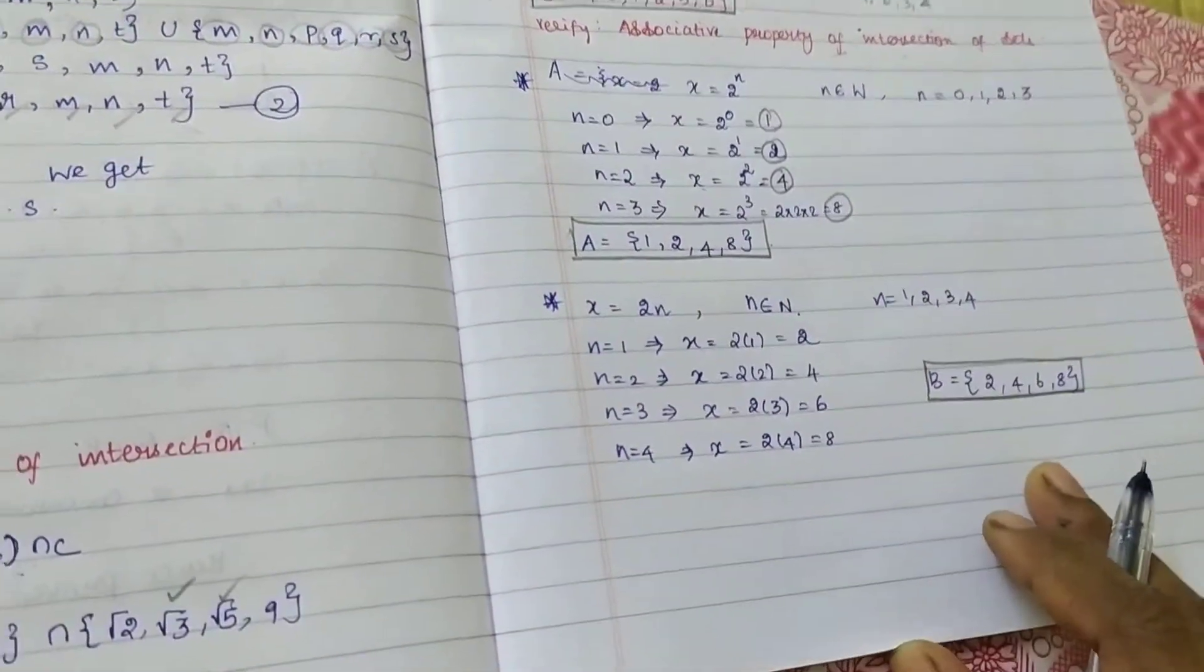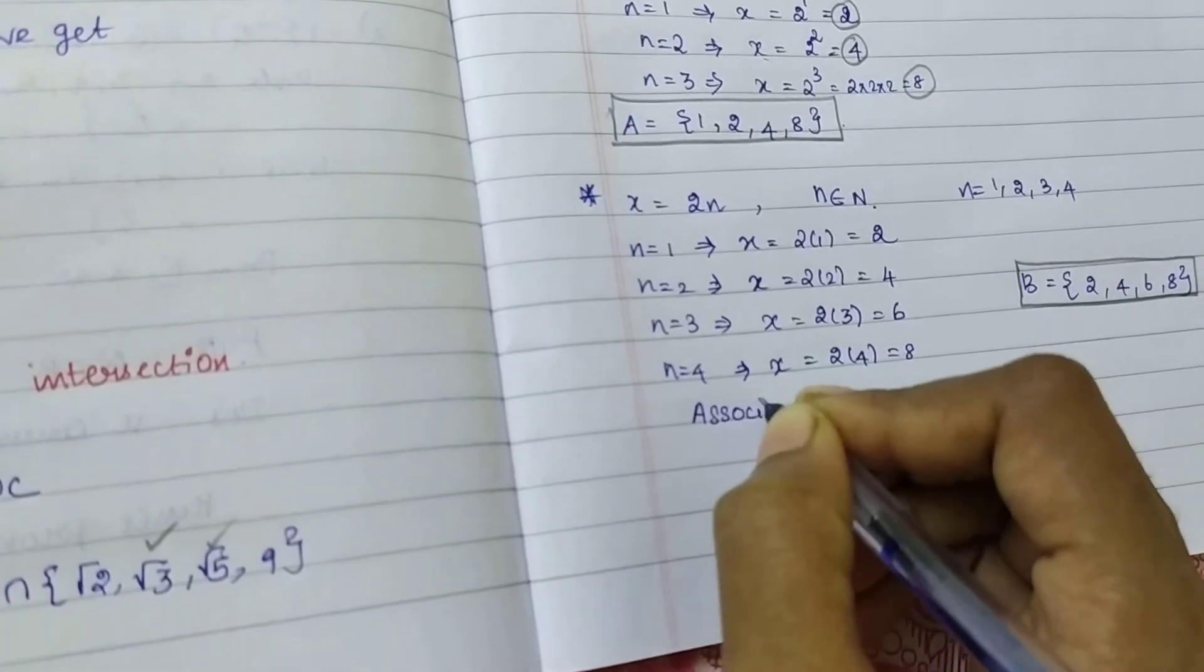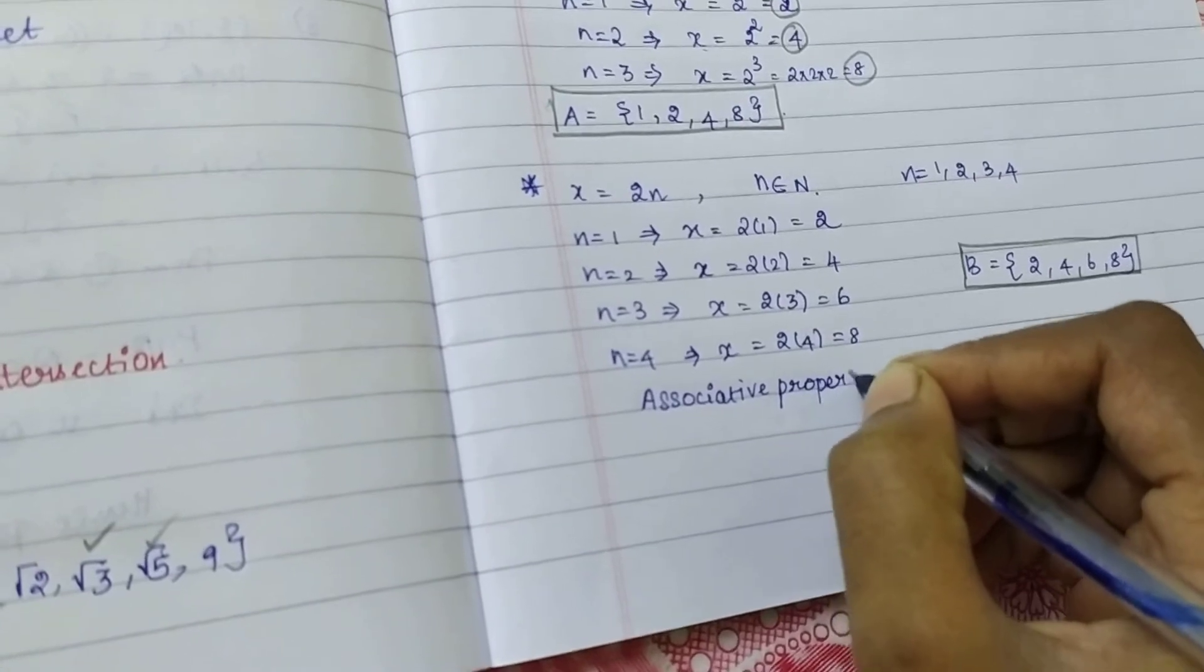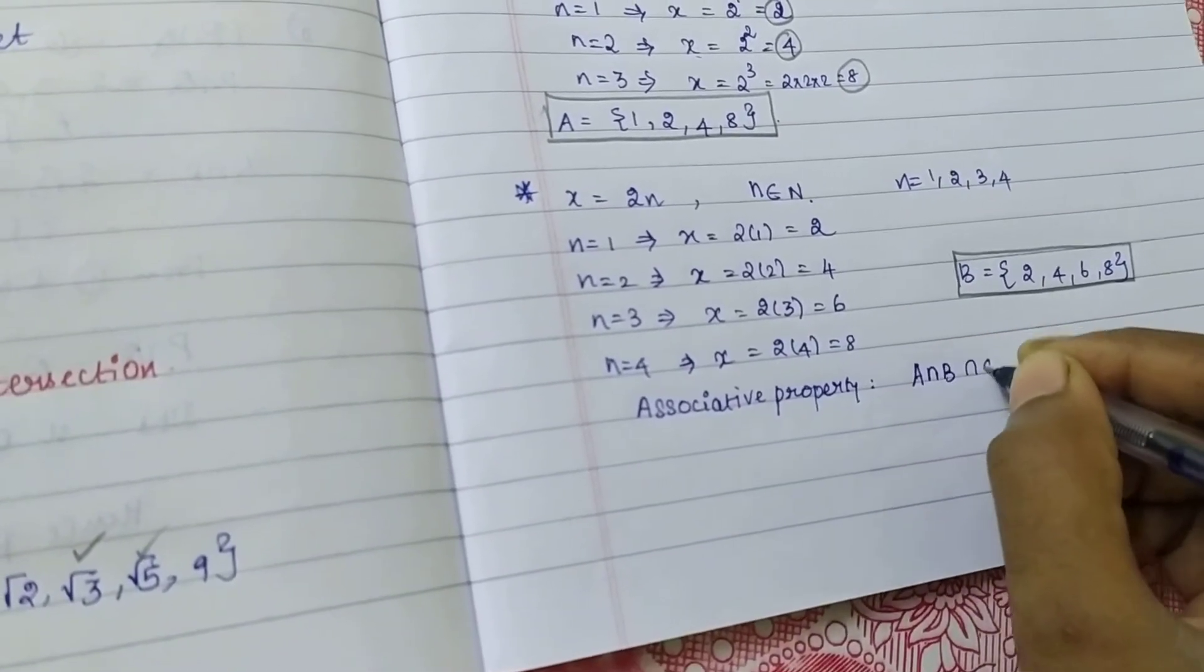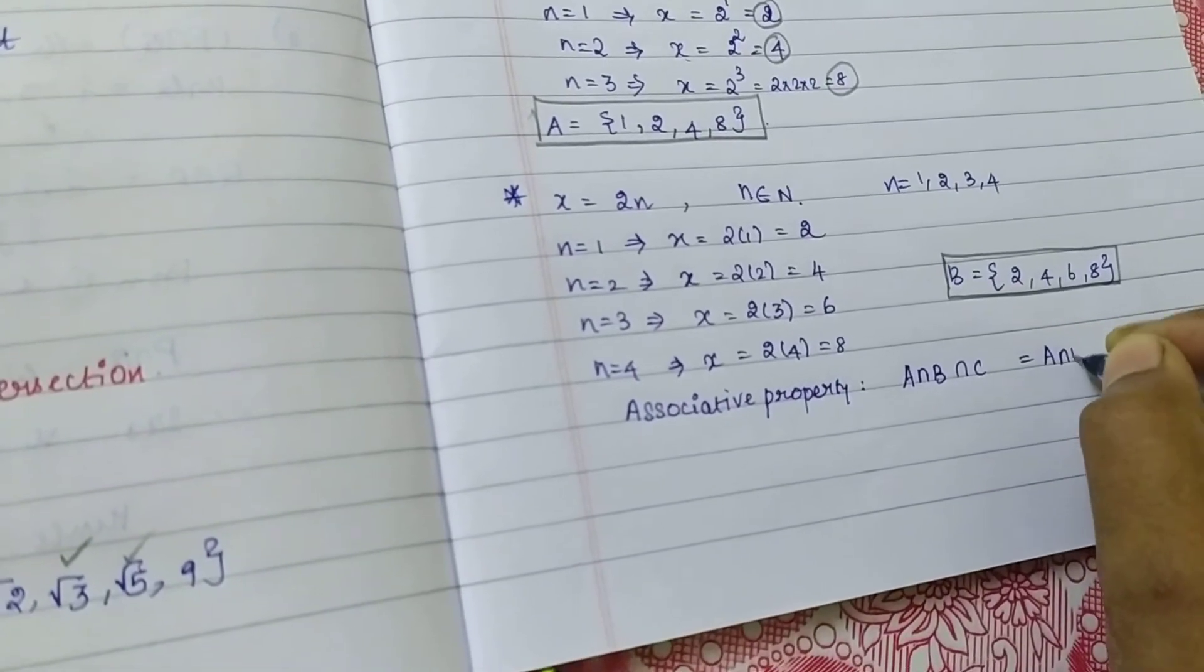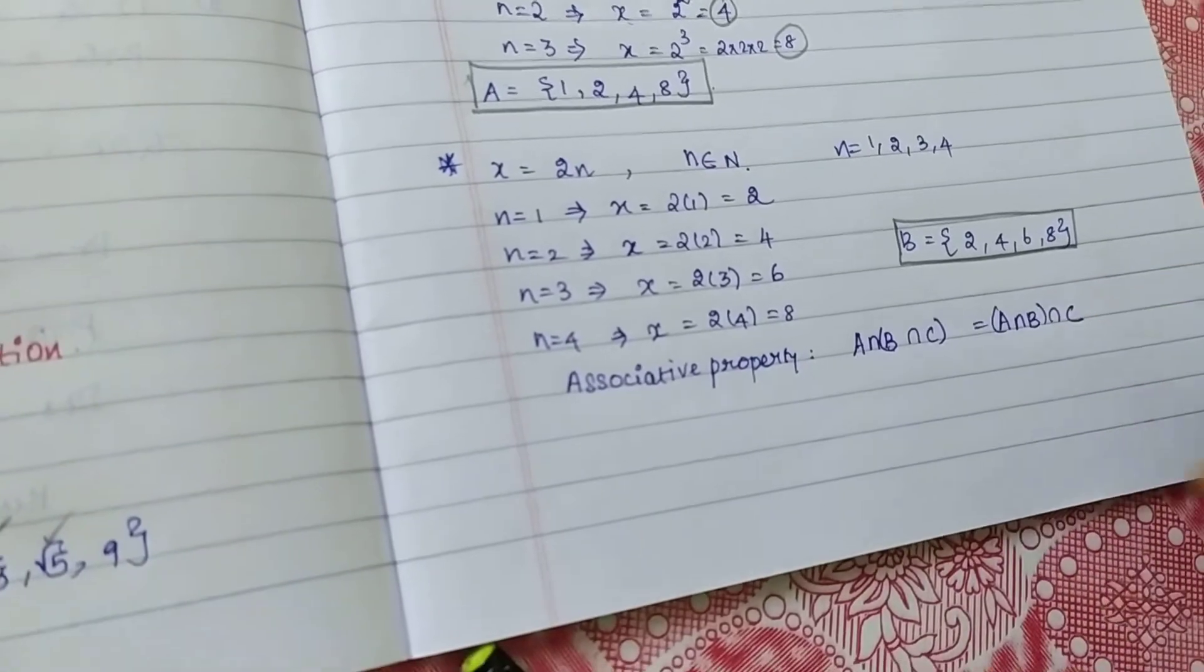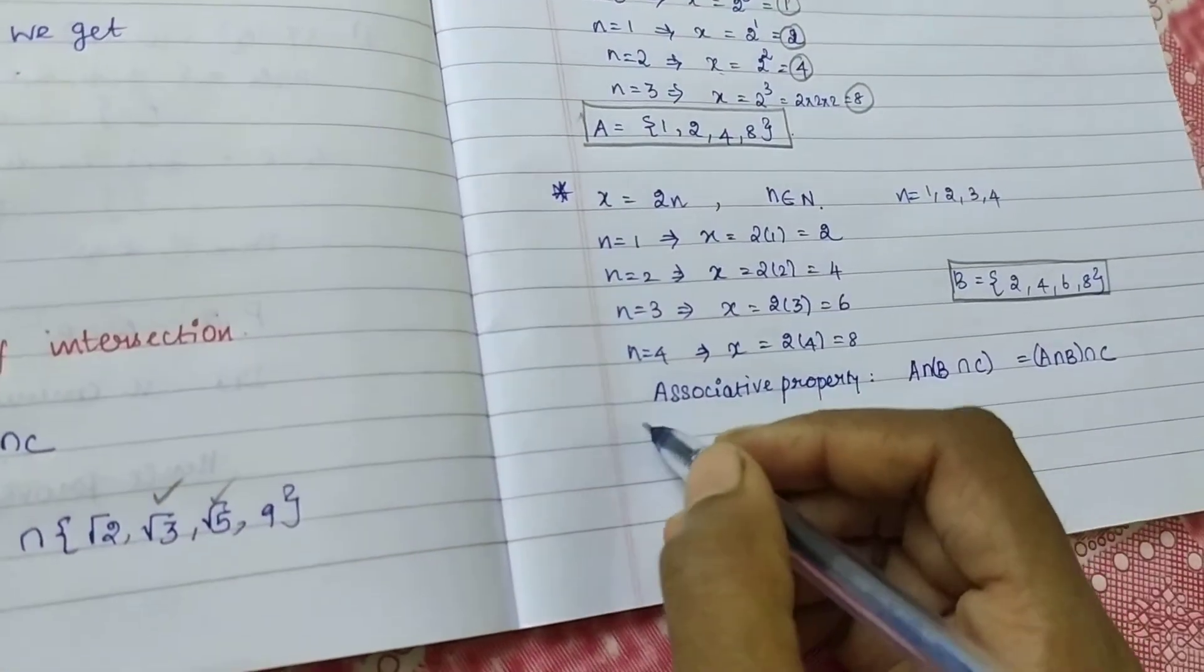Associative property for intersection: A intersection B intersection C. A intersection, bracketing B intersection C first.